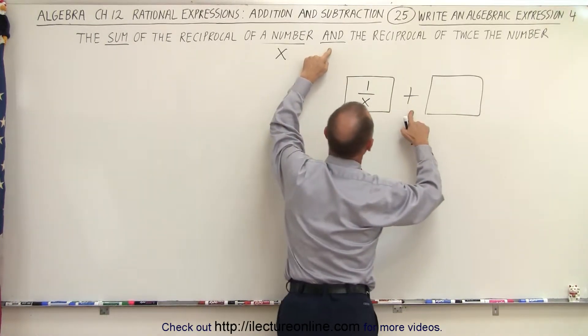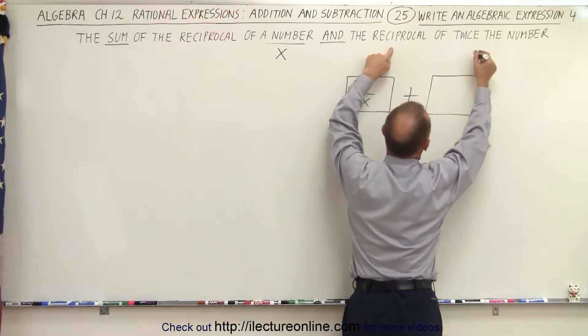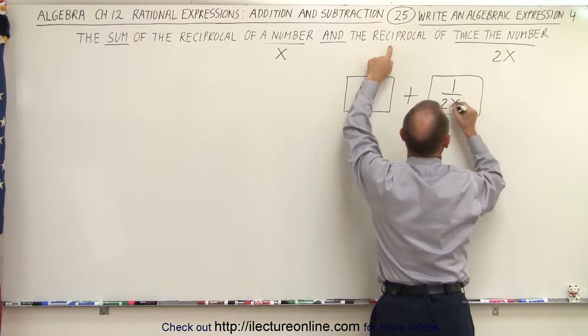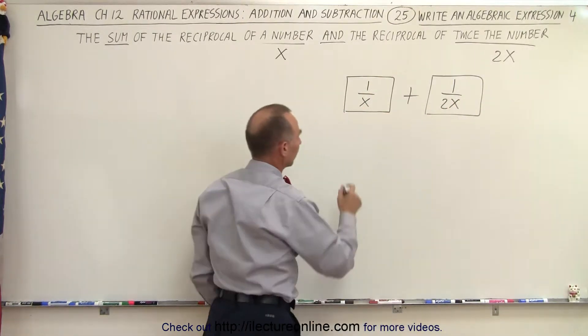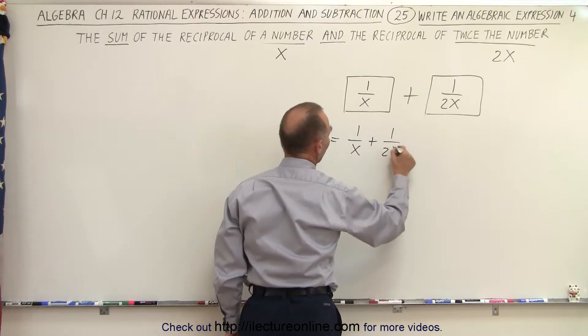And plus the reciprocal of twice the number. Now twice the number, that would be 2x. And the reciprocal of that would be 1 over 2x. And there's our expression. So this can be written as 1 over x plus 1 over 2x.